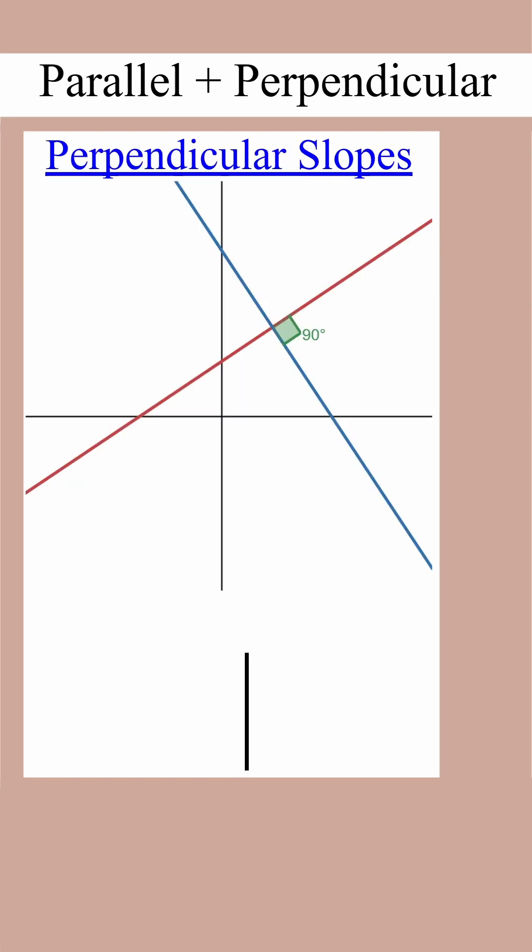Perpendicular lines intersect at one point and they form right angles. The slopes are opposite reciprocals, defined such that the slope of the perpendicular line is equal to negative one over the original slope.